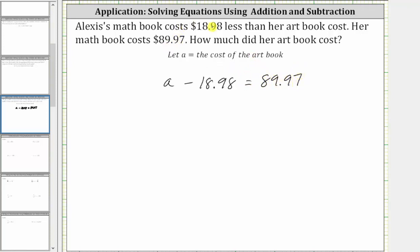Again, since the math book is $18.98 less than the cost of the art book, if we begin with the cost of the art book and subtract $18.98, we get the cost of the math book, which is $89.97.